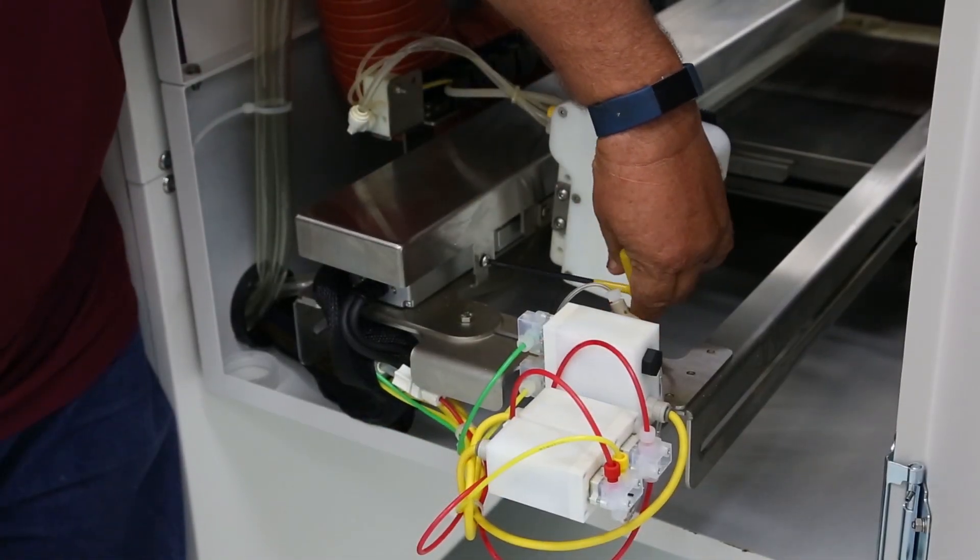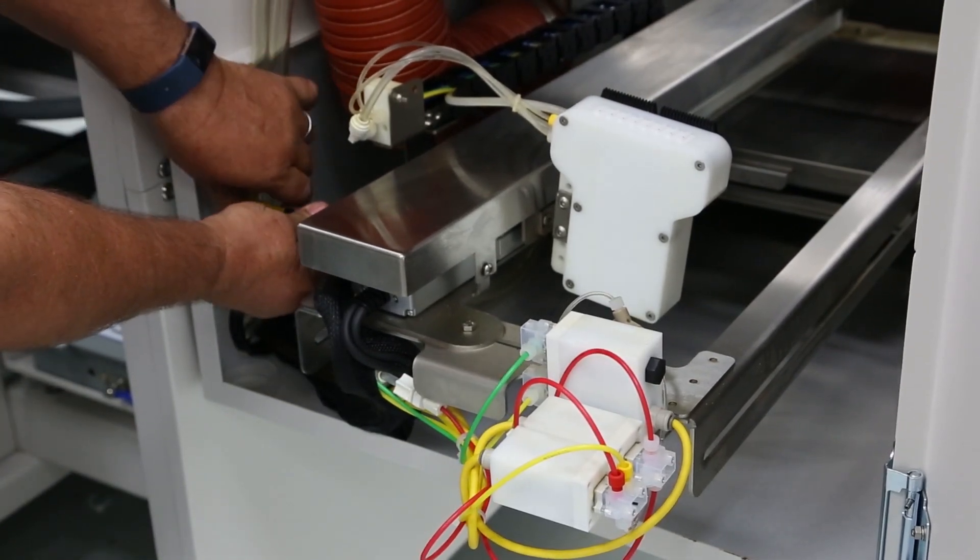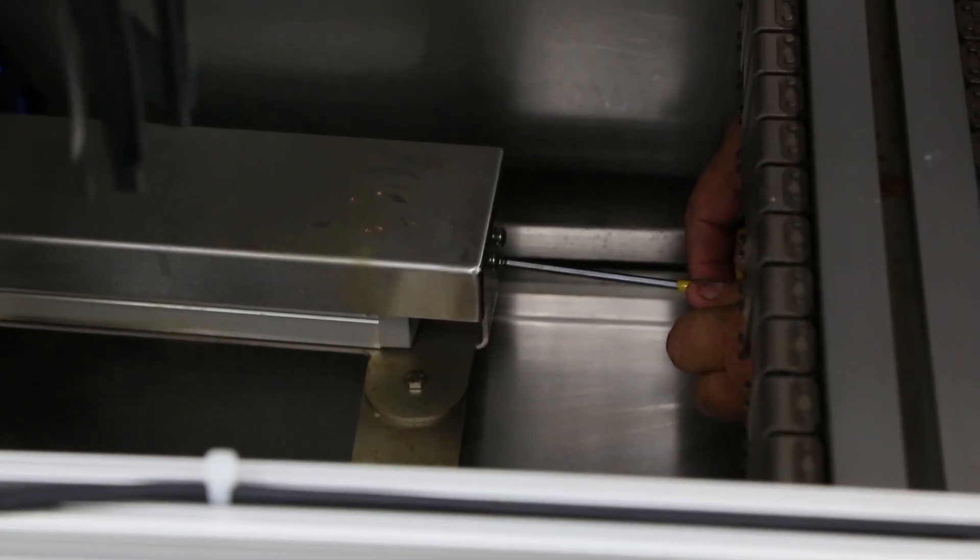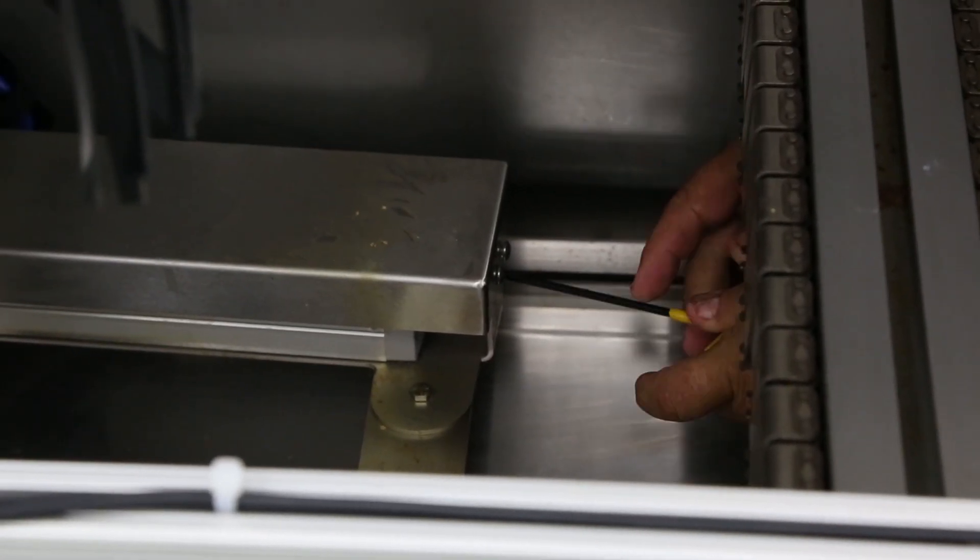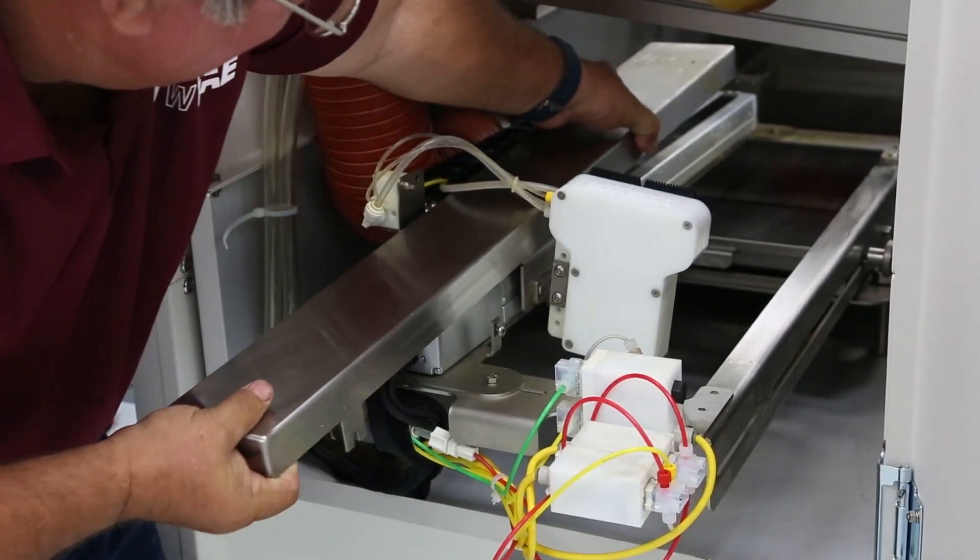Loosen the hex screws on the actuator cover. From the other side, loosen the front screws of the cover. With all four screws loose, you will be able to remove the cover.